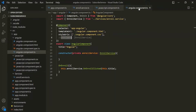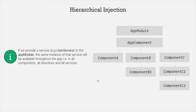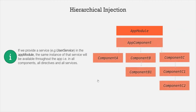This is what hierarchical dependency injection is. Apart from providing a service on a component, we can also provide a service at other places. The highest possible level where we can provide a service is the app module. If we provide a service at app module level, then the same instance of the service is available throughout the app — in all the components, all the directives, and all other services where we may inject this service.